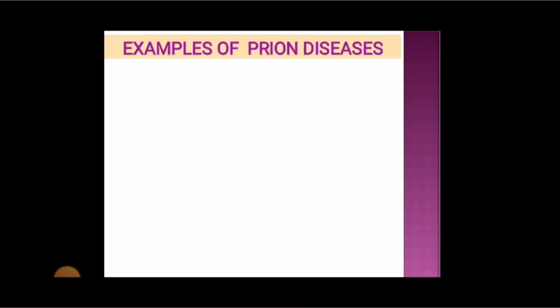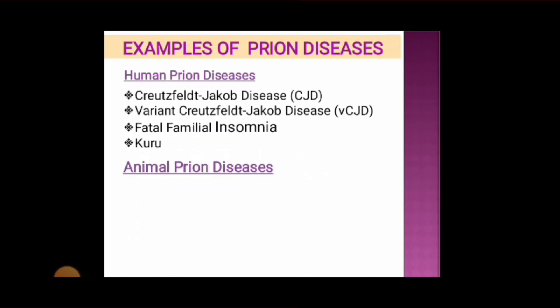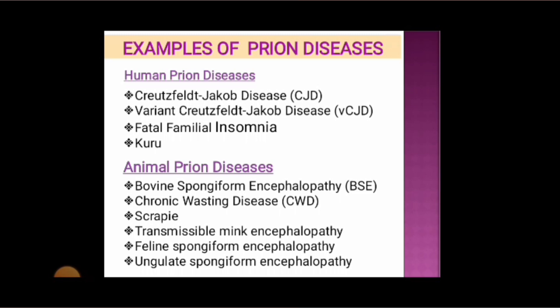Examples of prion diseases: Human prion diseases include Creutzfeldt-Jakob disease (CJD), variant Creutzfeldt-Jakob disease (vCJD), fatal familial insomnia, and Kuru. Animal prion diseases include bovine spongiform encephalopathy, chronic wasting disease, scrapie, transmissible mink encephalopathy, feline spongiform encephalopathy, and ungulate spongiform encephalopathy.